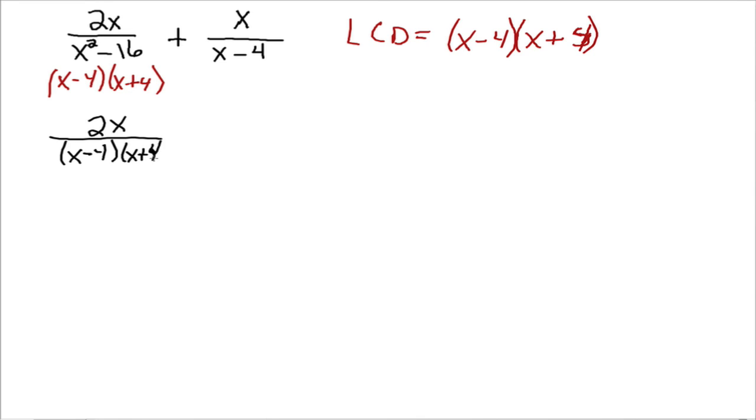But the second fraction has only x minus 4 in the denominator, so what do we need to do to the denominator in order to make it look like the LCD? Well, we need to multiply it by x minus 4.